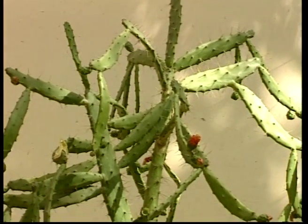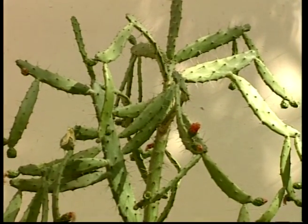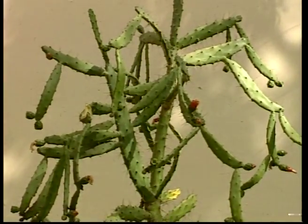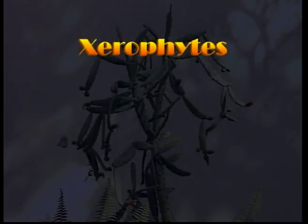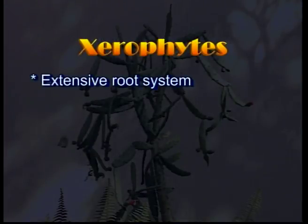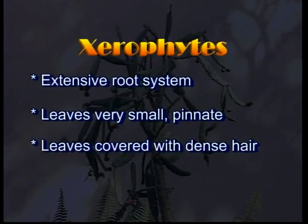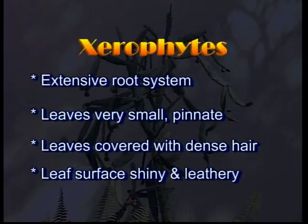Mesophytes' leaves droop down at noon and again become erect the next morning. Xerophytes are adapted to desert conditions where there is scarcity of water. They show adaptations like an extensive root system. The leaves become very small and form pinnae or leaflets. The leaves are covered with dense hair, and the leaf surface is shining and has a leathery texture.